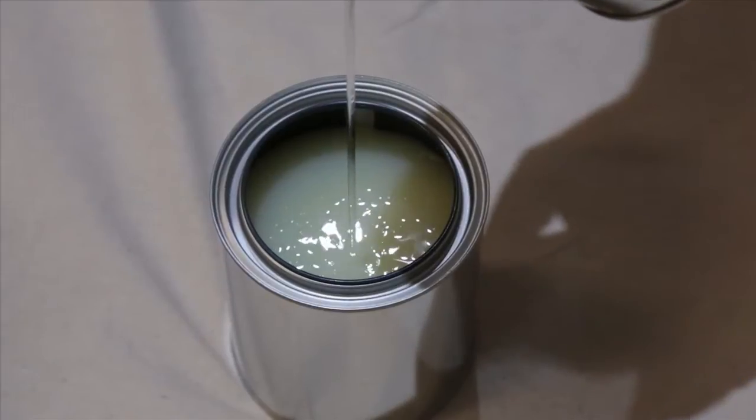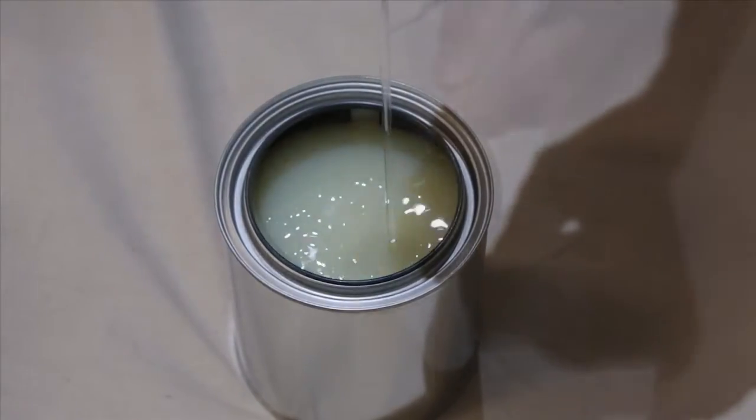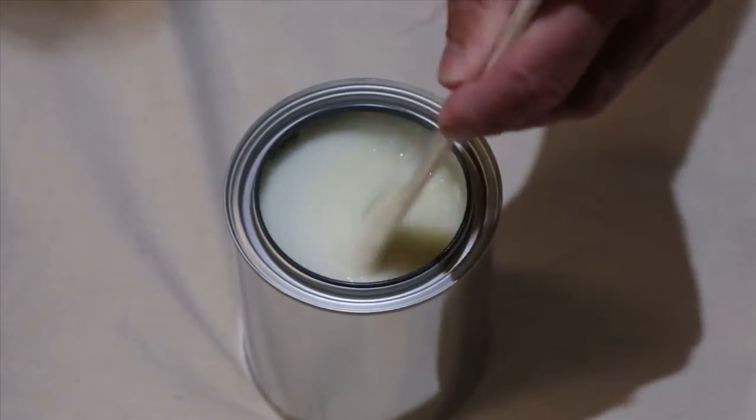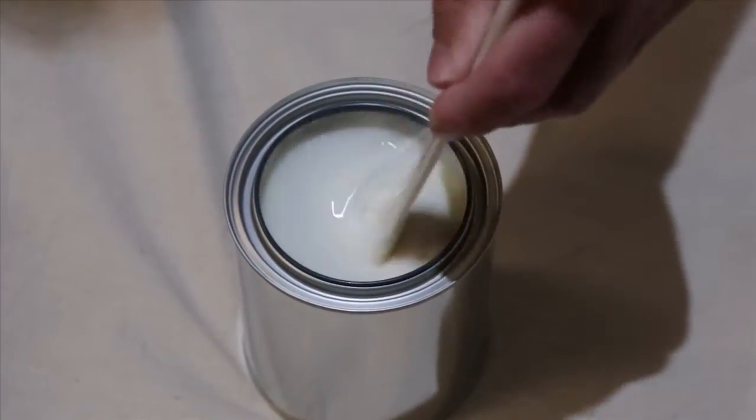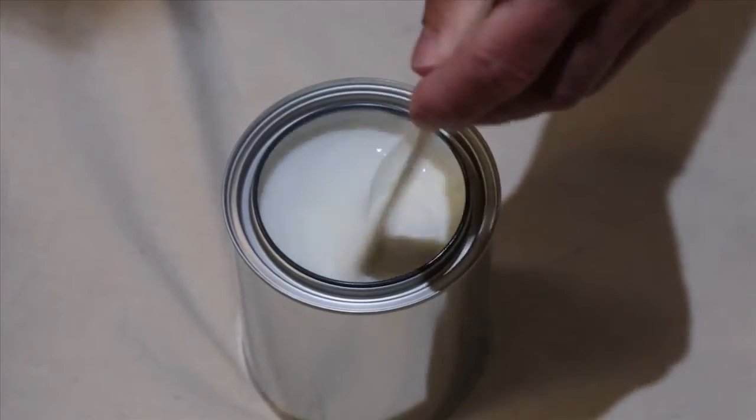Parts A and B are pre-measured so simply mix the two together to create one quart of coating capable of covering up to 50 square feet. The formula looks milky at first, that's a sign it's been mixed correctly.